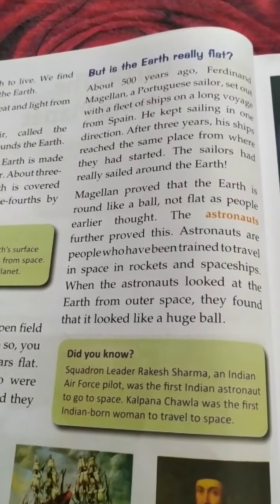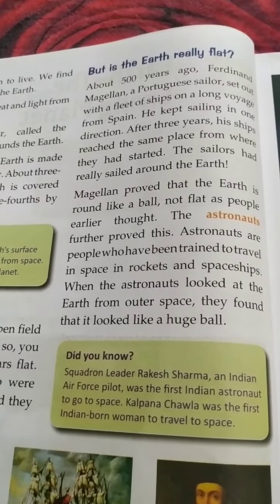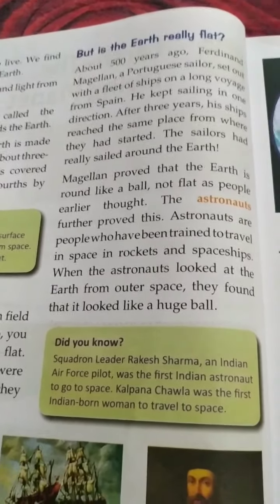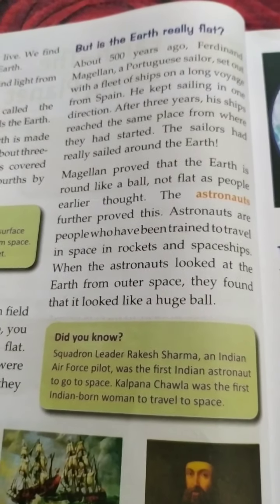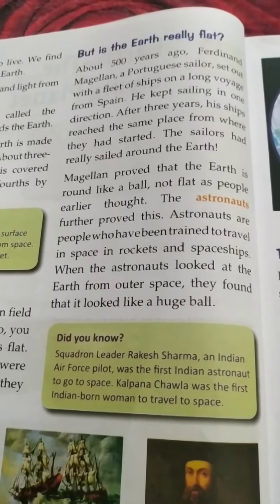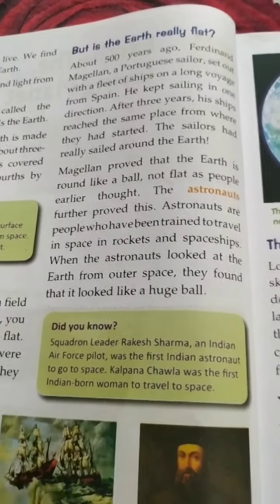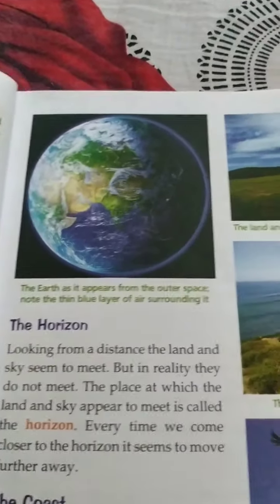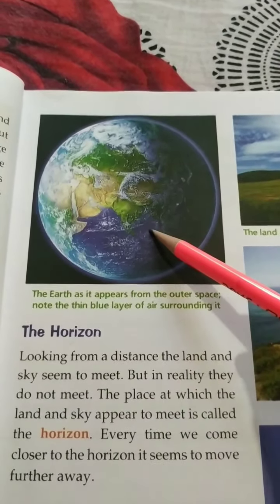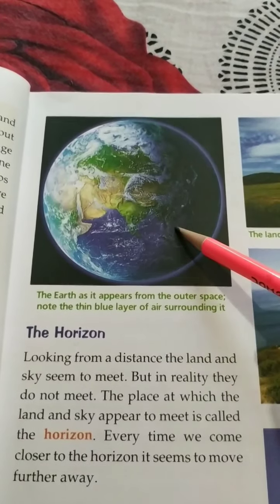Secondly, astronauts also proved that the shape of the earth is round. Astronauts are people who have been trained to travel in space in rockets and spaceships. When the astronauts looked at the earth from space, they found that it looked like a huge ball. Here you see the picture of the earth as it appears from outer space, where astronauts took the photograph.